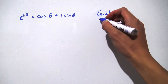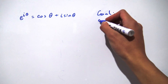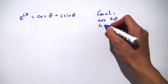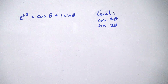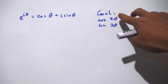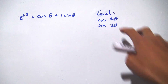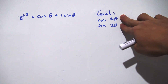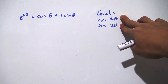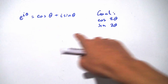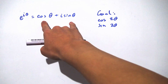What is our goal? Our goal is to redefine cosine of 2θ as well as sine of 2θ using a combination of cosines and sines of just that angle itself. So we don't want this 2 in the argument. Since we're doubling the angle for both cosine and sine, why not use this formula and substitute these into it.